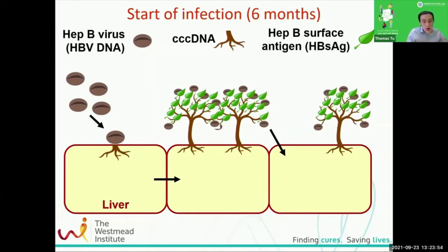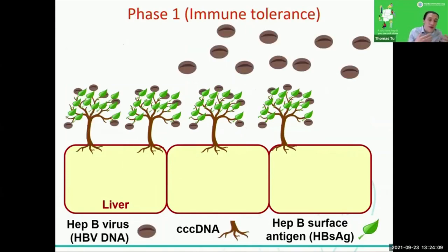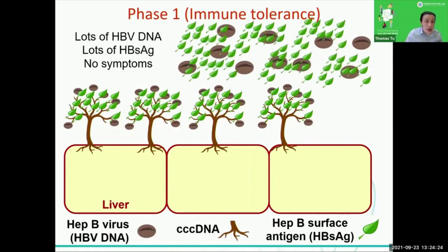CCC DNA also allows the cells to produce other proteins from the virus — in this case, surface antigen, which I've pictured here as a leaf. In the first phase, the immune tolerance phase, this is basically what happens: the entire liver is infected with Hepatitis B, it's producing a lot of seeds and a lot of surface antigen. But the trees themselves don't appear to actively harm the liver — there are very few symptoms occurring when you're in this phase.